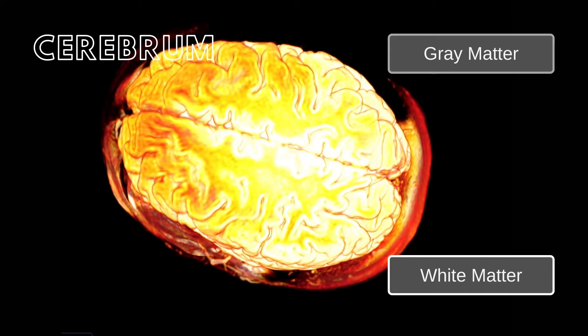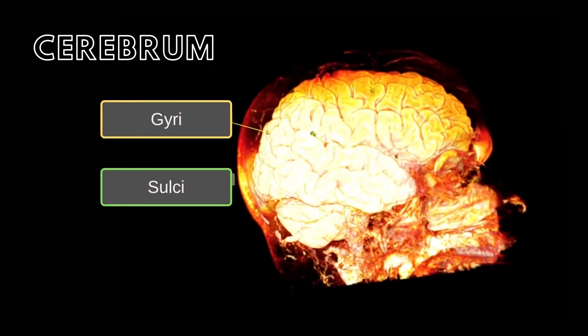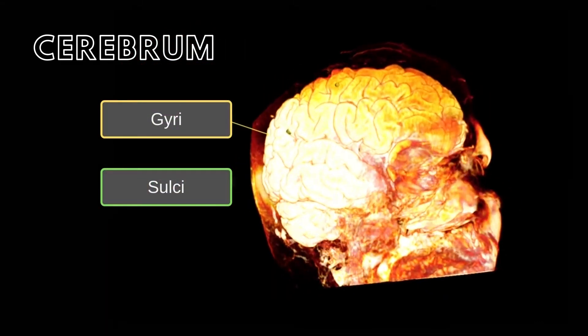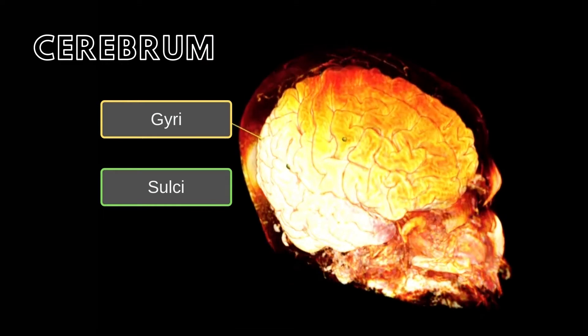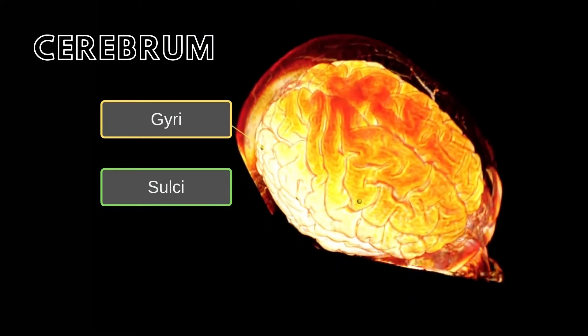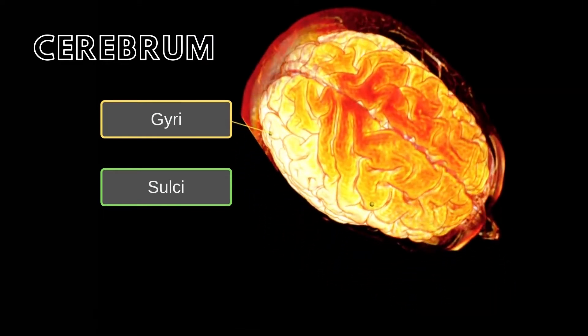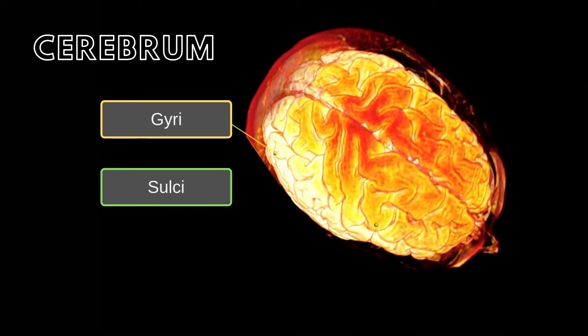The surface of the cerebrum is covered in folds called sulci and ridges called gyri. The cerebrum is subdivided into lobes according to the bone of the skull that is superficial to them.